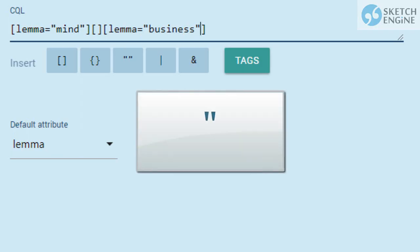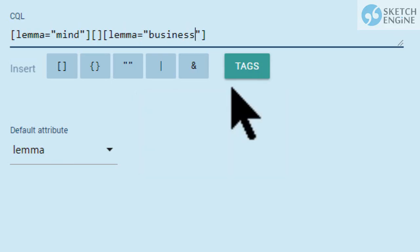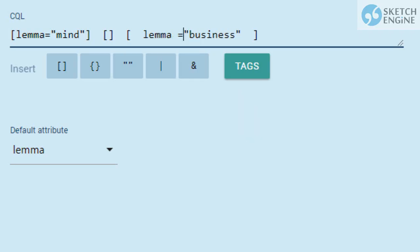Make sure you use straight quotes, not rounded ones. You can use spaces to make the CQL easier to read. As a rule of thumb, do not use spaces inside quotes.